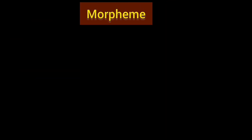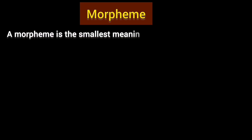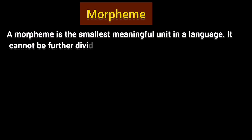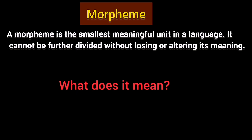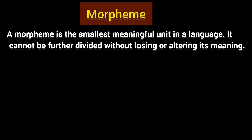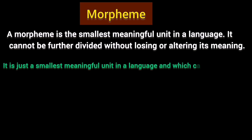Let's first learn about a morpheme. It can be defined as: a morpheme is the smallest meaningful unit in a language. It cannot be further divided without losing or altering its meaning. Simply, a morpheme is just the smallest meaningful unit in a language, which cannot be further divided — if we try to divide it, it will either lose its meaning or change its meaning.